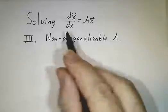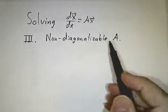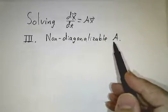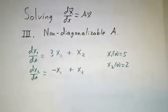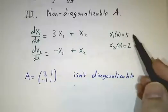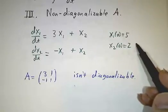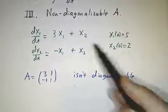To finish off our series on systems of linear differential equations, we're going to consider the case where the matrix is not diagonalizable. So here's our example. The matrix is A = (3,1; -1,1), we'll take initial conditions x₁(0)=5 and x₂(0)=2. And this is the same matrix that we use for non-diagonalizable difference equations.